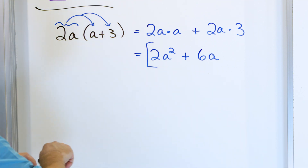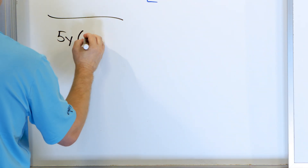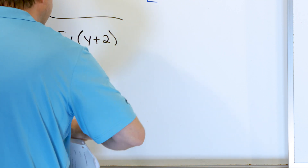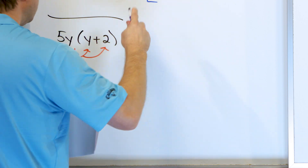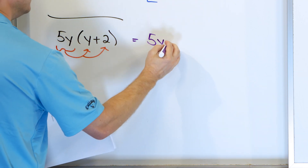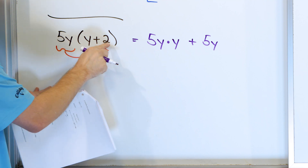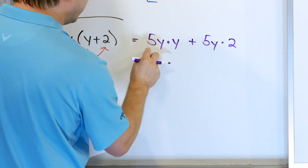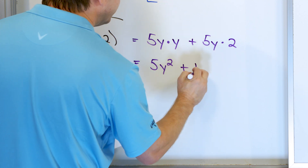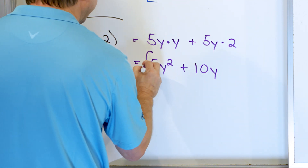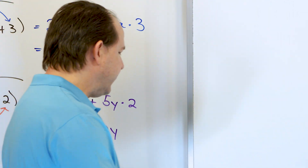What about 5y times parentheses y plus 2? The whole 5y on the outside gets multiplied times each interior term. So 5y times y gives us 5y squared, because y times y is y squared and 5 stays. Then 5y times 2: 5 times 2 is 10, and y comes along. So we have 5y squared plus 10y. That's the correct answer.